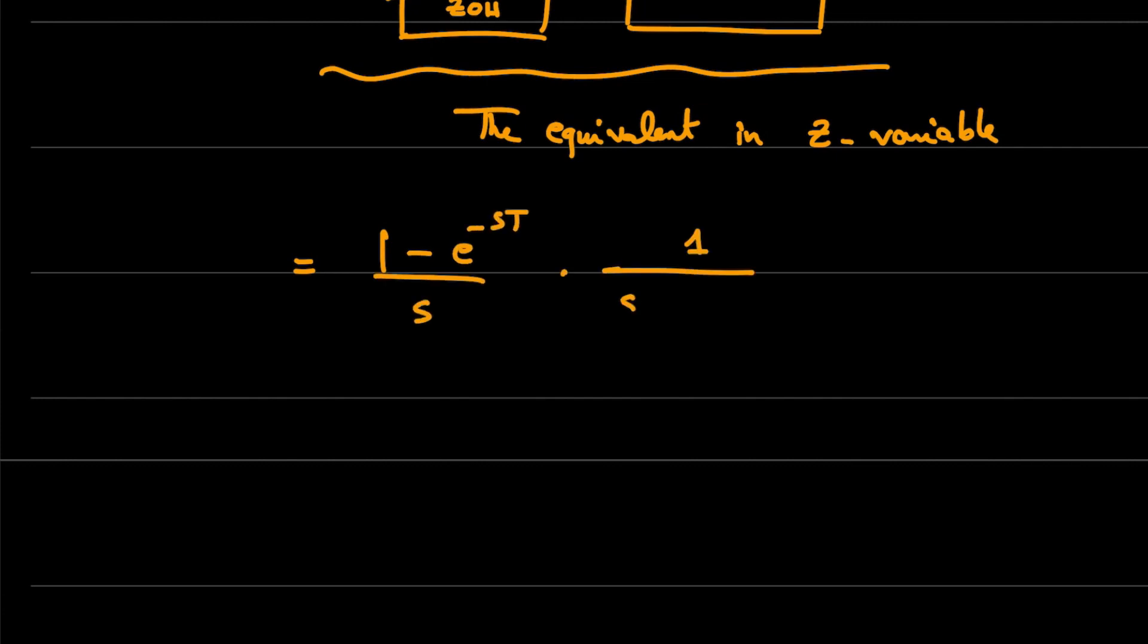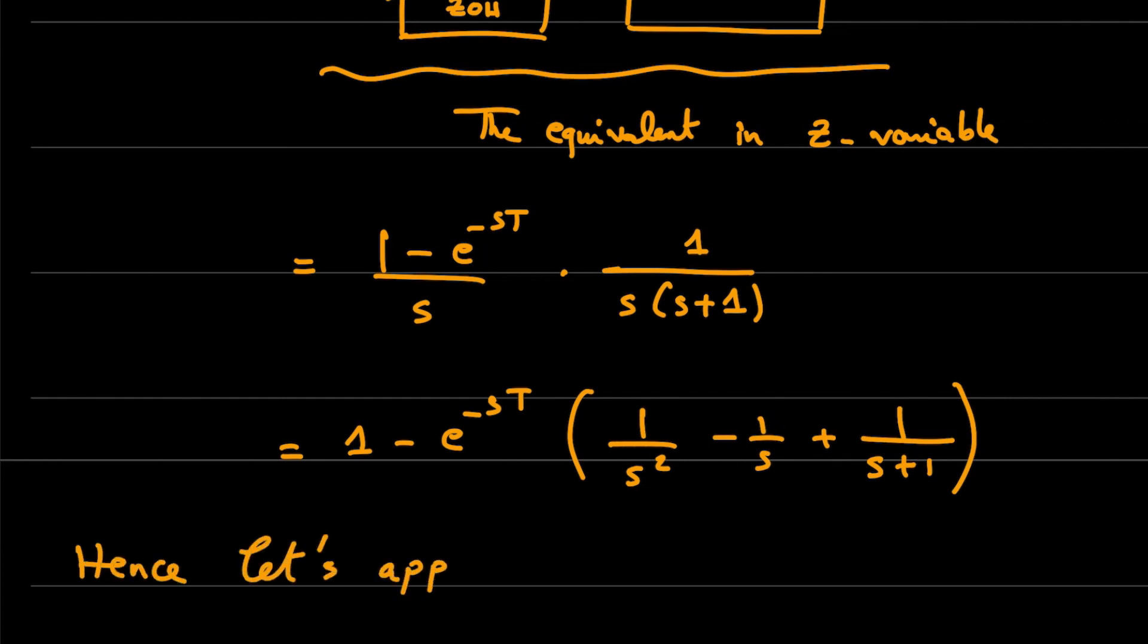So here we have the multiplication of the two blocks: the transfer function of the zero-order hold and the transfer function of the system. I will develop everything, so we will use the z-transform on this equation.